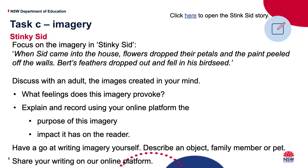Task C is we're looking at imagery - painting a picture in someone's mind. Up the top here, this is from the story from last week, Stinky Sid, that you read. If you'd like to read the story again, click on that link up the top where it says click here to open the Stinky Sid story. It says focus on the imagery in Stinky Sid: 'When Sid came into the house, flowers dropped their petals and the paint peeled off the walls. Bert's feathers dropped out and fell in his bird seed.' That paints a really clear picture of what the room looked like when Sid walked in. We want you to discuss that and what images it puts into your mind. What feelings do those images provoke - meaning what does it make happen to you? What feelings happen to you when you read about this? Does it make you happy? Does it make you sad? Why does it make you feel that way?